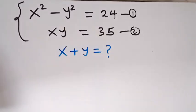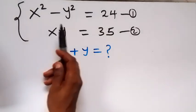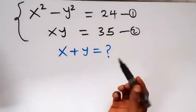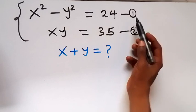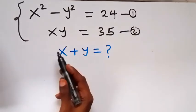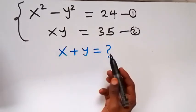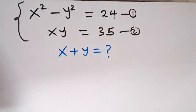Hello, you are welcome. How to solve this system of equations. We have x squared minus y squared equals to 24 — we label that as equation 1. And xy equals to 35 — we label that as equation 2.